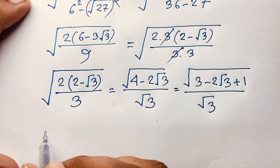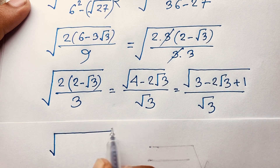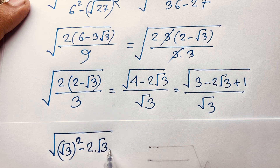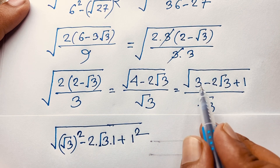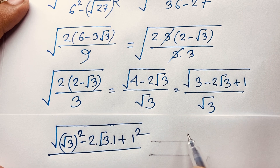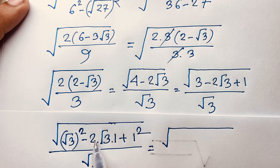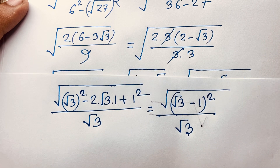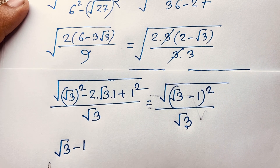This can be written as (square root 3) squared minus 2 times square root 3 times 1 plus 1 squared. Since a squared minus 2ab plus b squared equals (a minus b) squared, with a equals square root 3 and b equals 1, the numerator equals (square root 3 minus 1) squared over square root 3.